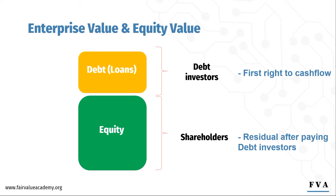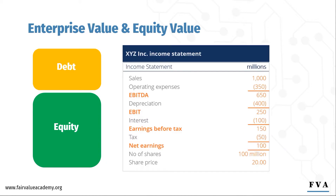Let's look at how this flows through to the income statement. Notice operating expenses are paid first, typically to vendors and employees — in any business, employees must be paid first. We ignore depreciation here because it's non-cash. And notice when you add back depreciation, we get what we call EBITDA —